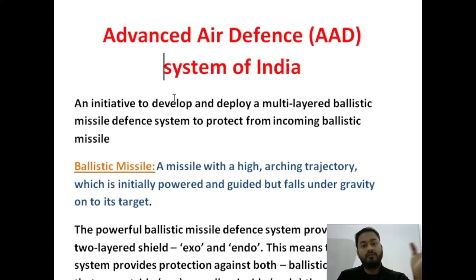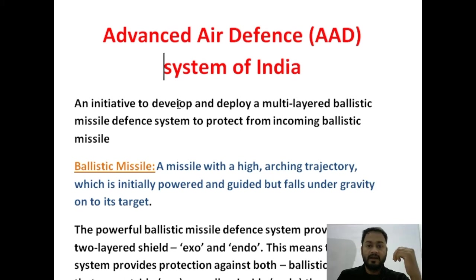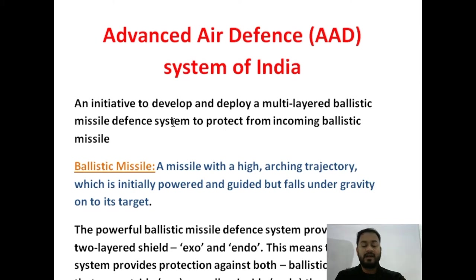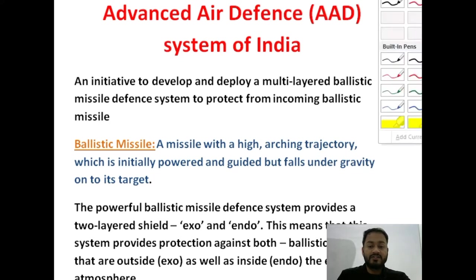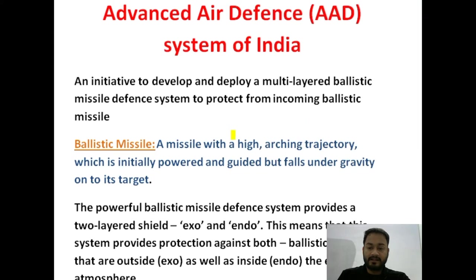The missiles are guided. Whenever any enemy neighbor of India fires a ballistic missile, it is countered with the help of India's air defense system. To understand this topic, we should first know about the ballistic missile. A ballistic missile has a high trajectory — trajectory means it has a dome-like shape. So this is a trajectory; a missile will fire in this way.